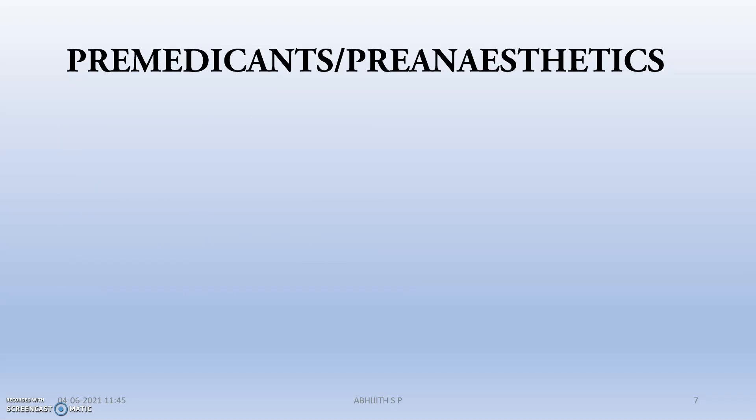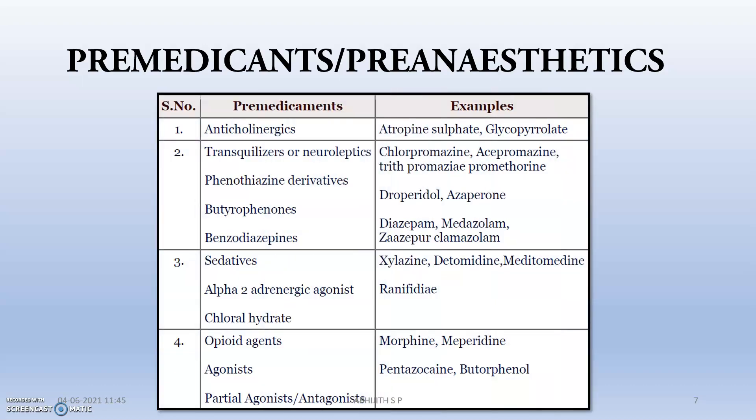The pre-anesthetics mainly used in the veterinary field are classified into four categories: anticholinergics, tranquilizers or neuroleptics, sedatives, and opioid agents. Anticholinergics include atropine and glycopyrrolate. Tranquilizers include phenothiazine derivatives such as chlorpromazine and acepromazine; butyrophenones such as droperidol, haloperidol, and azaperone; and benzodiazepines such as diazepam, midazolam, and alprazolam. Sedatives mainly include alpha-2 adrenergic agonists such as xylazine, detomidine, and medetomidine.